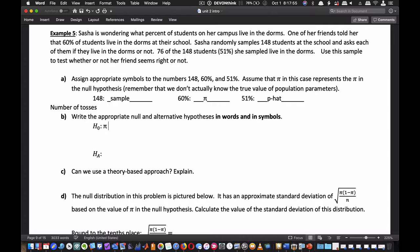In symbols, we have H₀: π = 0.6 according to her friend. For the alternative, we need to decide: π < 0.6, π > 0.6, or π ≠ 0.6. Since our sample proportion is 51%, which is less than 60%, you might think we'd use π < 0.6. But the question asks whether her friend seems right or not—either it's 0.6 or it's not 0.6.